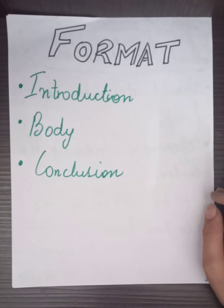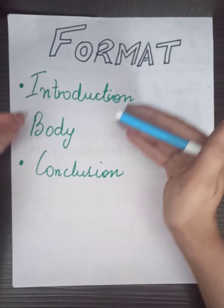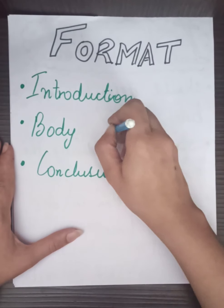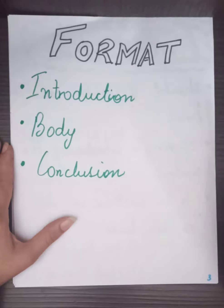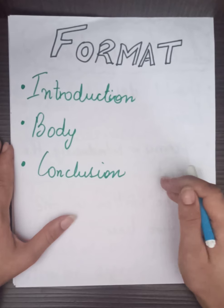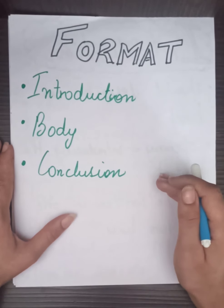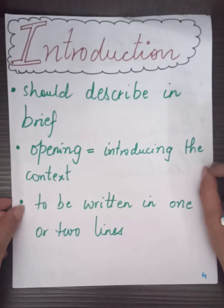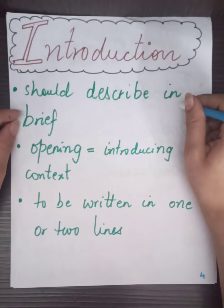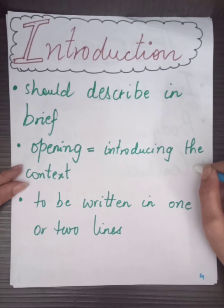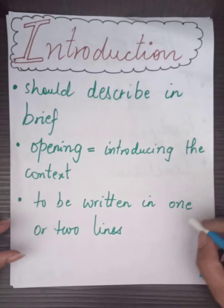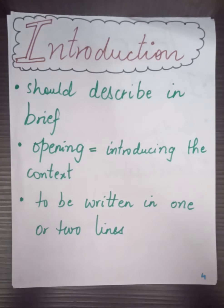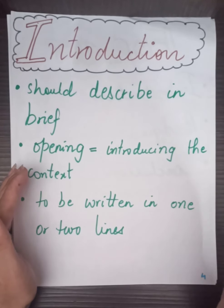Now we are going to talk about the format of an analytical paragraph. It includes three things: introduction, body, and conclusion. We are going to understand these three things one by one. At the end of the video I am going to share a written sample of an analytical paragraph, so that you all can understand and analyze the way it is to be written. Let's talk about the introduction — it should describe the paragraph in brief, introducing the context in your opening line, which should not be more than one or two lines, because you have to restrict yourself to the word limit of 100 to 120 words.